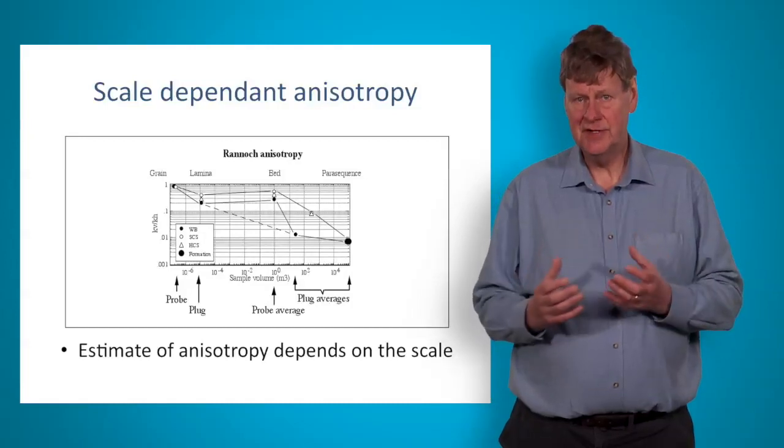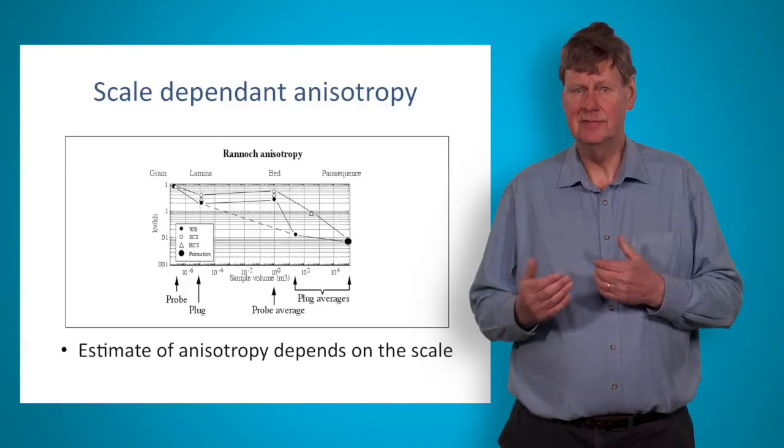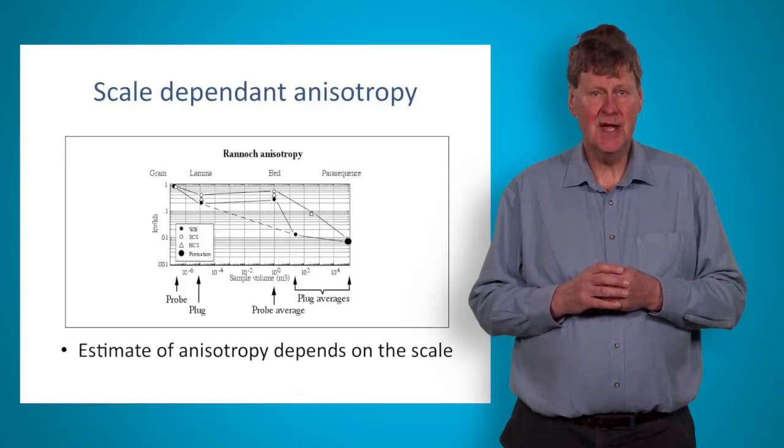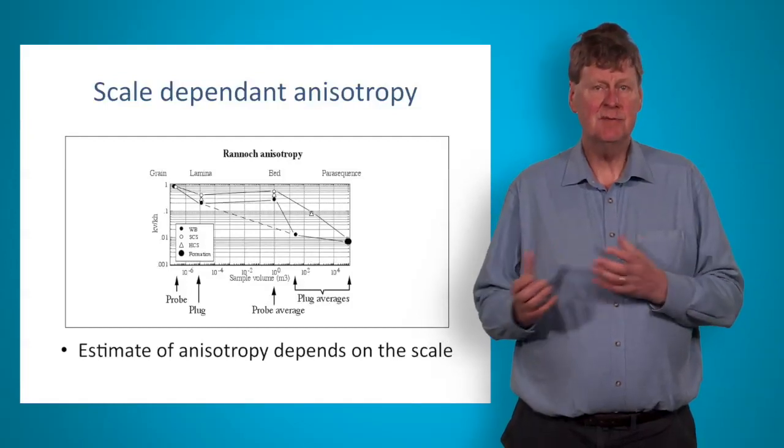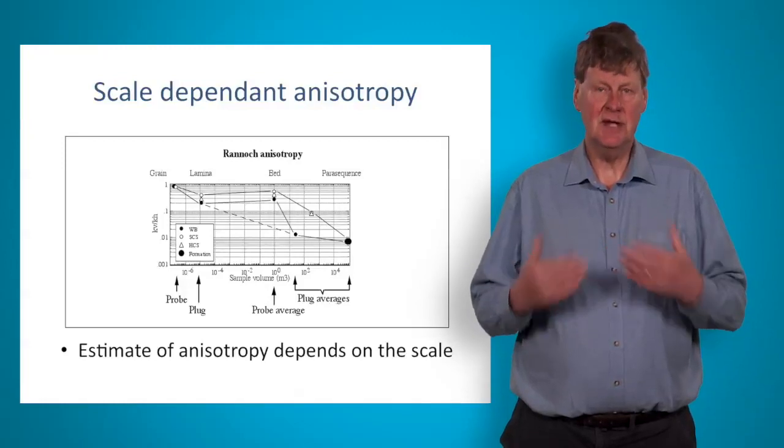It should also be clear why we consider KVKH to be a scale-dependent property. Anisotropy, for the reservoir engineers this is primarily in the vertical to horizontal directions, tends to, but not always, increase with scale, and plots like this one from the North Sea might be useful, even if only conceptual.